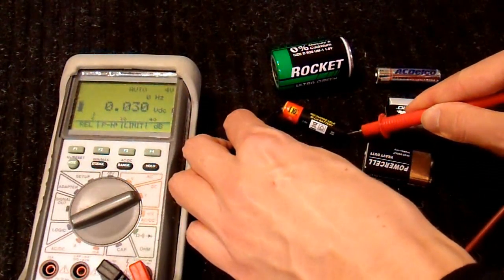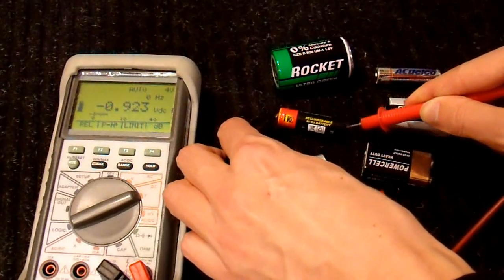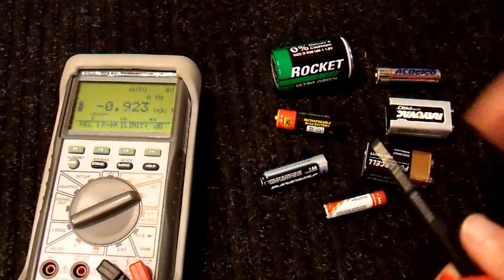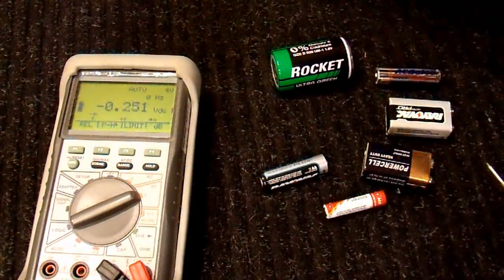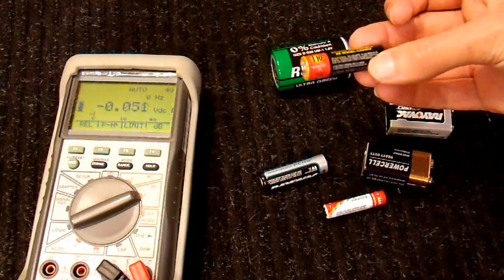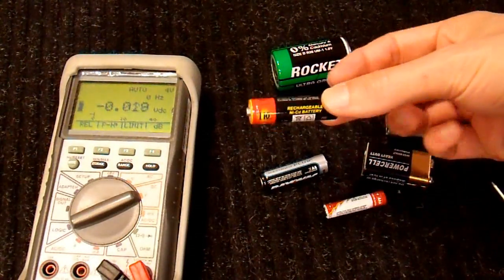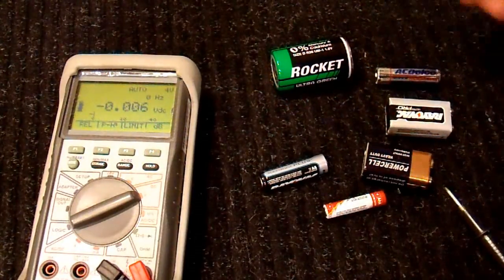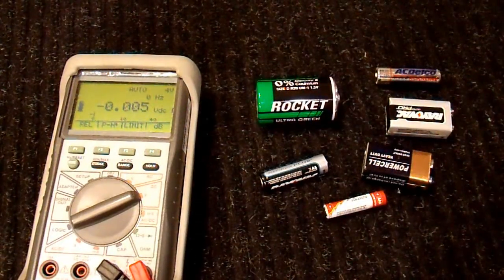And this here is a NiCAD, so it's going to read a lower voltage. It's a discharged NiCAD. So we're just going to chuck that one aside for now. This came out of a solar light outside my house. It hasn't been charged in probably a year and a half. So it's no wonder that it's dead. We'll just set that aside.